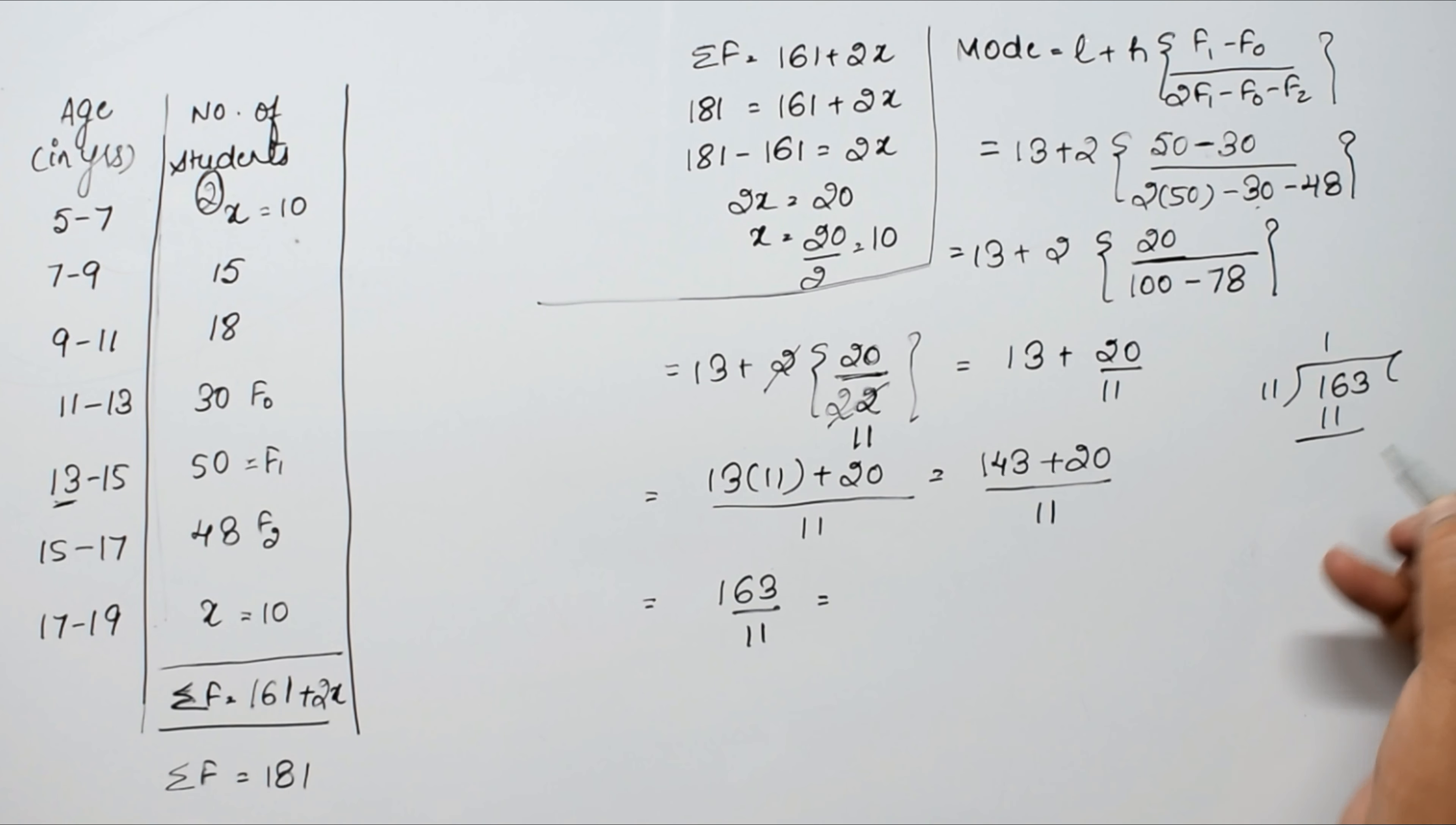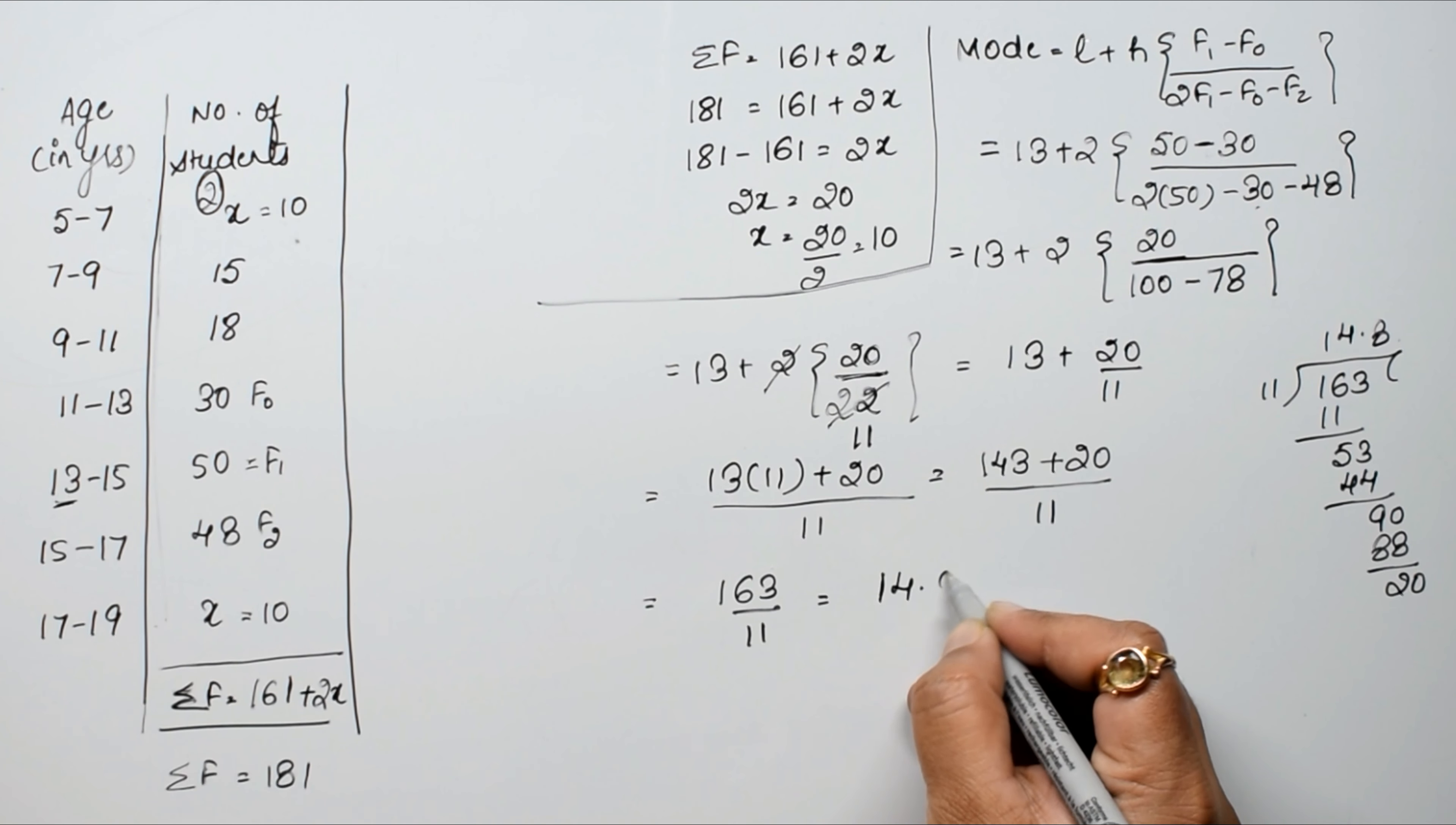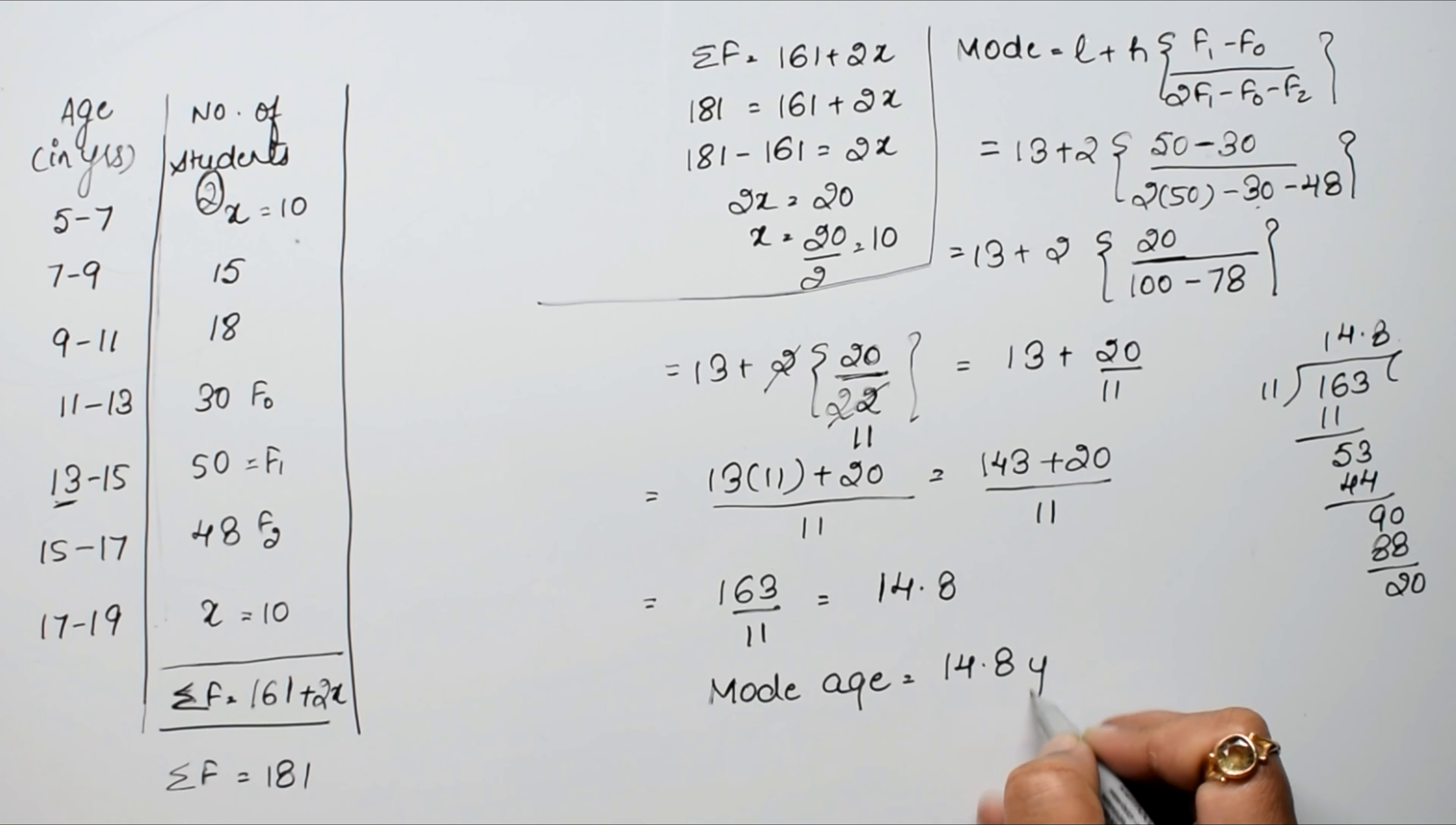Now 163 divided by 11 equals 14 point 8. Since we are talking about age, we keep it to one decimal place. So our mode age equals 14.8 years. This is the answer.